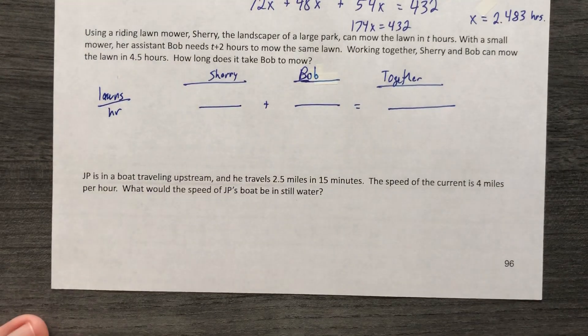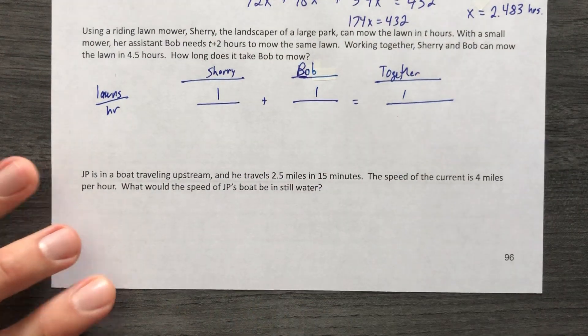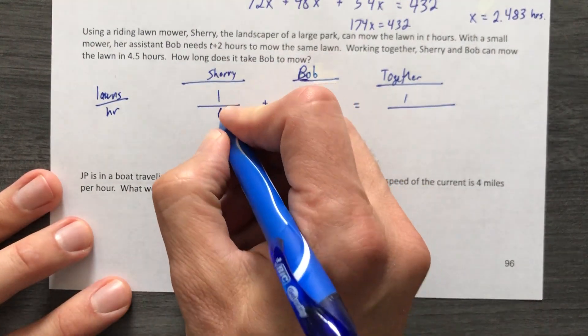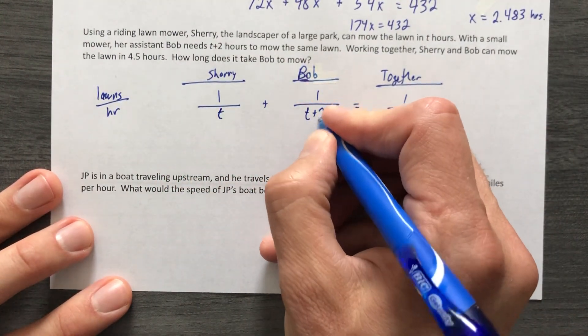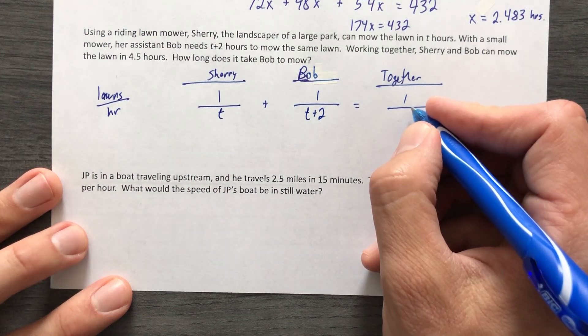Now, it's kind of odd to say it's lawns but there's only one lawn, which really means all your numerators are going to be one. So Sherry can mow the lawn in T hours. Bob is in T plus two hours, and together, when they do this, it's going to take them how long? Four and a half.